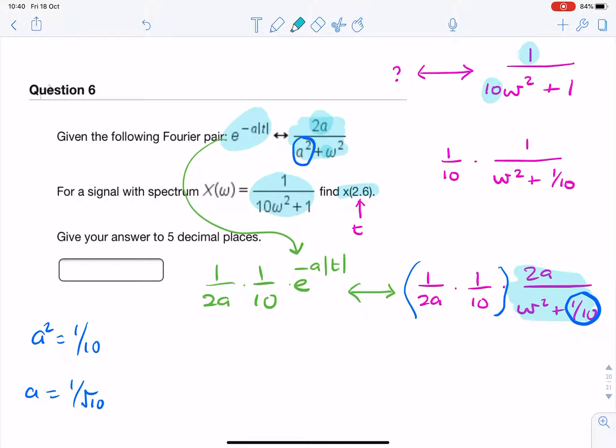Now, t is simply 2.6. And a, we've already found. So we just substitute the values for a and t.